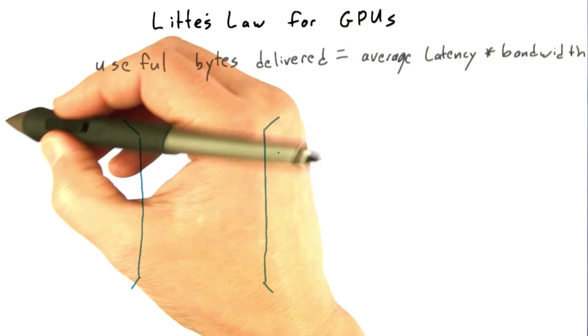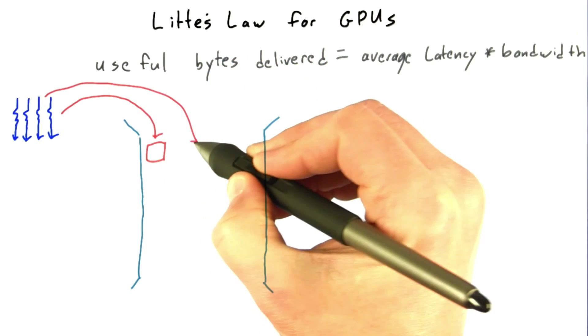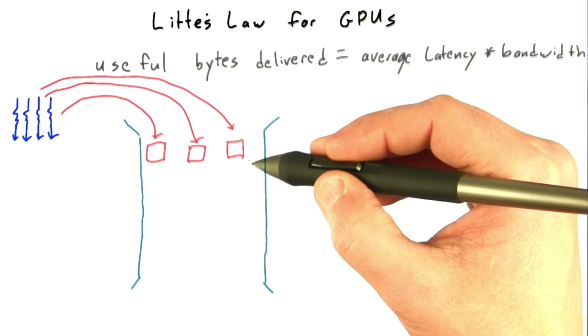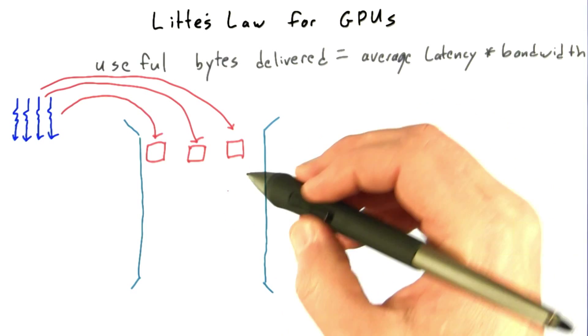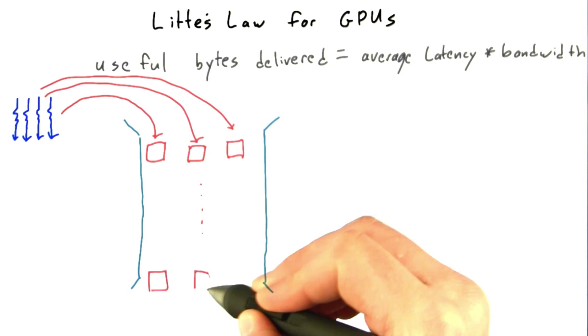I find it helpful to think of the memory system as a pipe. Threads issuing requests stuff memory transactions into that pipe. For example, these could be load instructions to read a certain address in memory, and the result of that transaction eventually falls out the bottom of the pipe to head back to those threads.